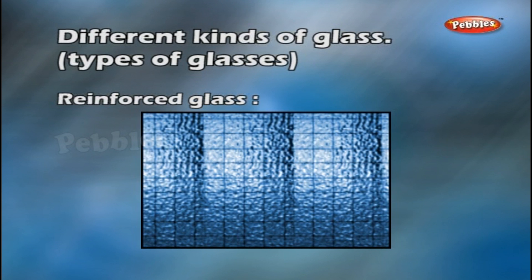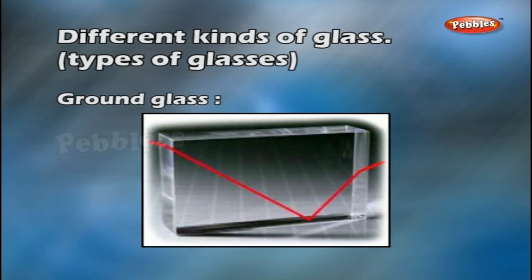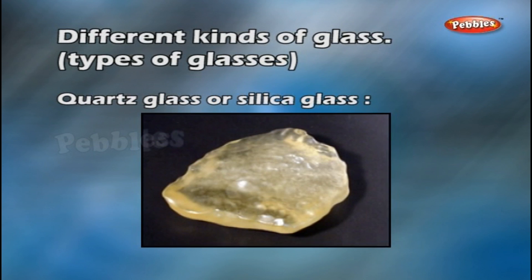Re-enforced glass. It has a network of wires embedded in it and does not shatter easily. Ground glass. It is soft glass, the surface of which has been ground by emery and turpentine. Quartz glass or silica glass. It is obtained from pure silica. It has a low coefficient of expansion and does not break even when plunged in water while red-hot.